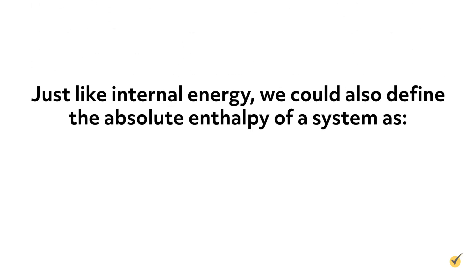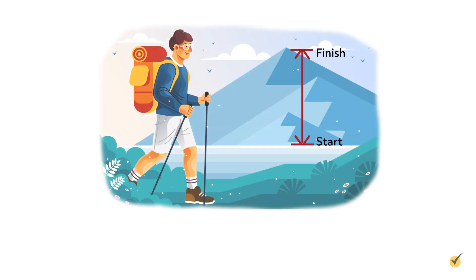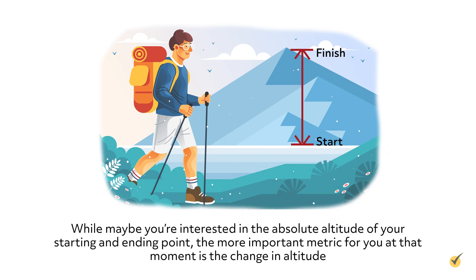Just like internal energy, we could also define the absolute enthalpy of a system as H equals U plus PV. But measuring the total enthalpy of a system would be really hard and isn't super useful anyway. To illustrate this point with an everyday example, consider a mountain hike. While maybe you're interested in the absolute altitude of your starting and ending point, the more important metric for you at that moment is the change in altitude. It's the same for enthalpy and internal energy. We're most interested in their change during a chemical reaction rather than the absolute value.